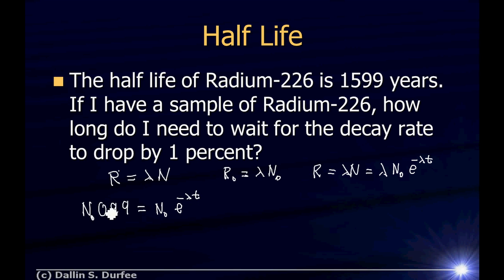And I want that to equal N-naught e to the minus lambda T, right? So after some time, the number of nuclei I have left should be 99% of what I started with. Then the number will have gone down by 1%, which means the decay rate will have gone down by 1%. The N-naughts cancel out, and I just have to solve 0.99 is equal to E to the minus lambda T. That's what I have to solve.